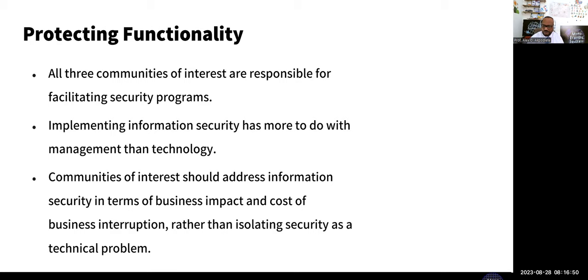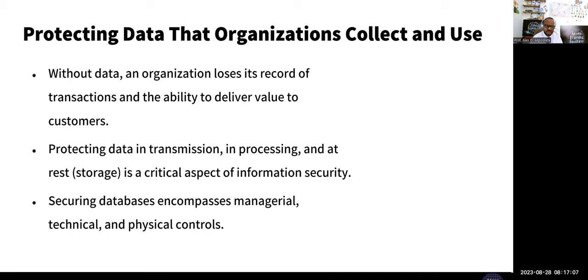When protecting the functionality of your organization, all three communities of interest are responsible for facilitating your security program. Without data, the organization does not exist — you need data to do everything. You need to protect data in transit, data in process, and data at rest. The security countermeasures for data at rest include encryption such as AES or symmetric encryption. Data in transit is protected using things like VPN tunneling. Data in process involves concepts like homomorphic encryption.